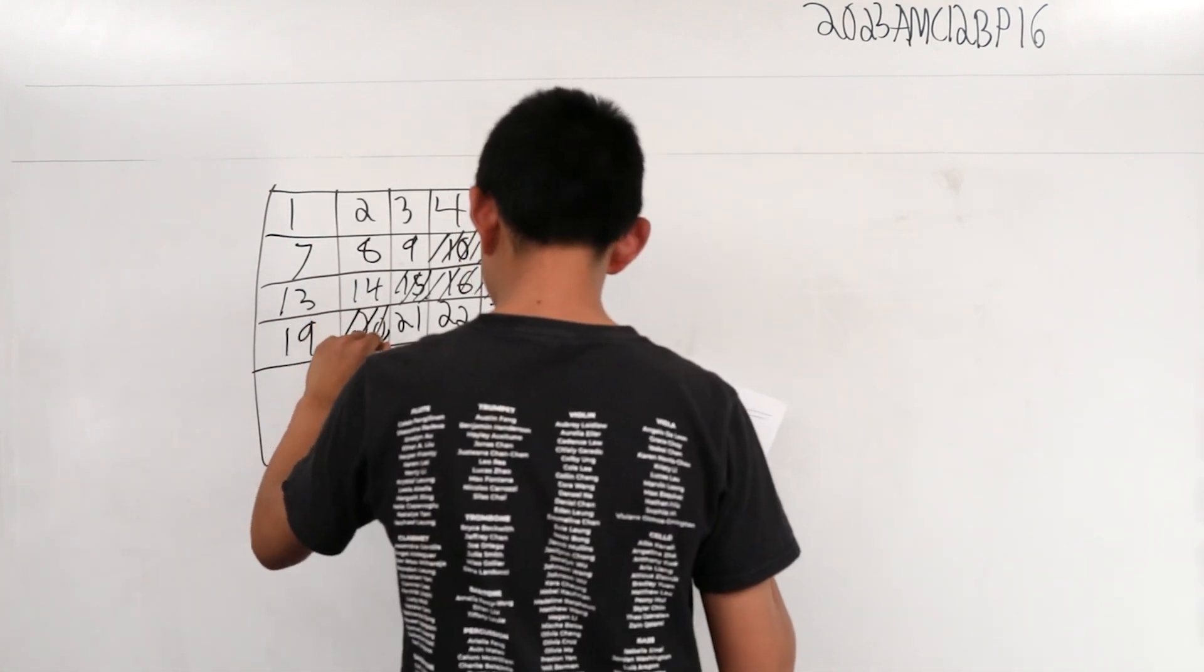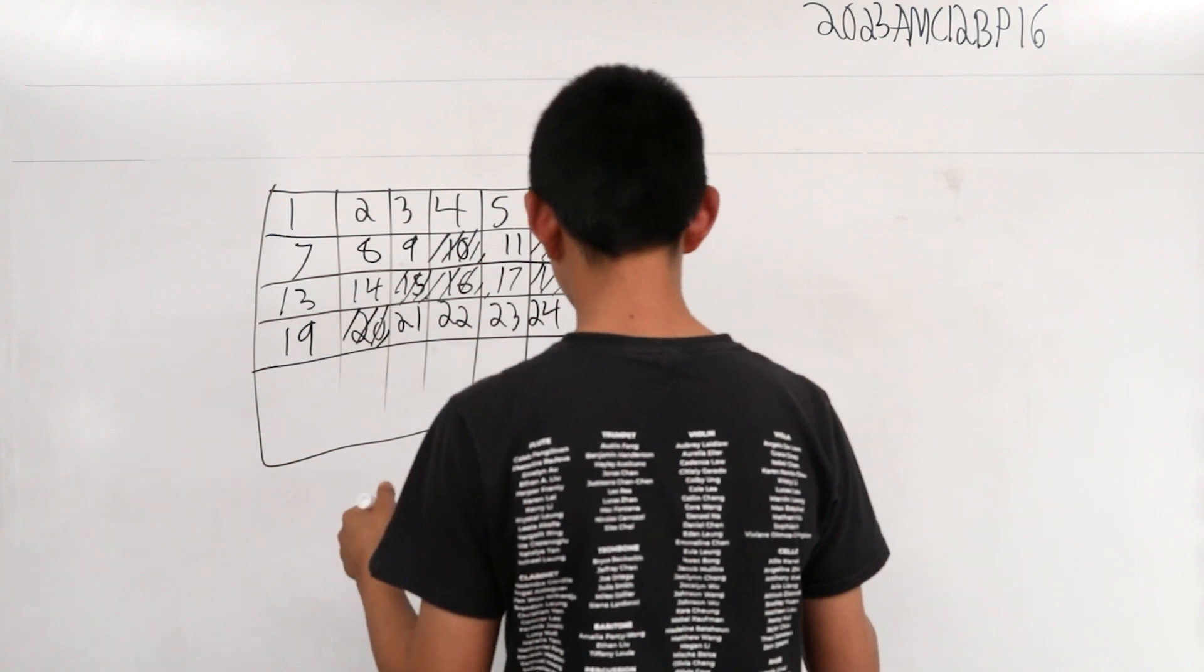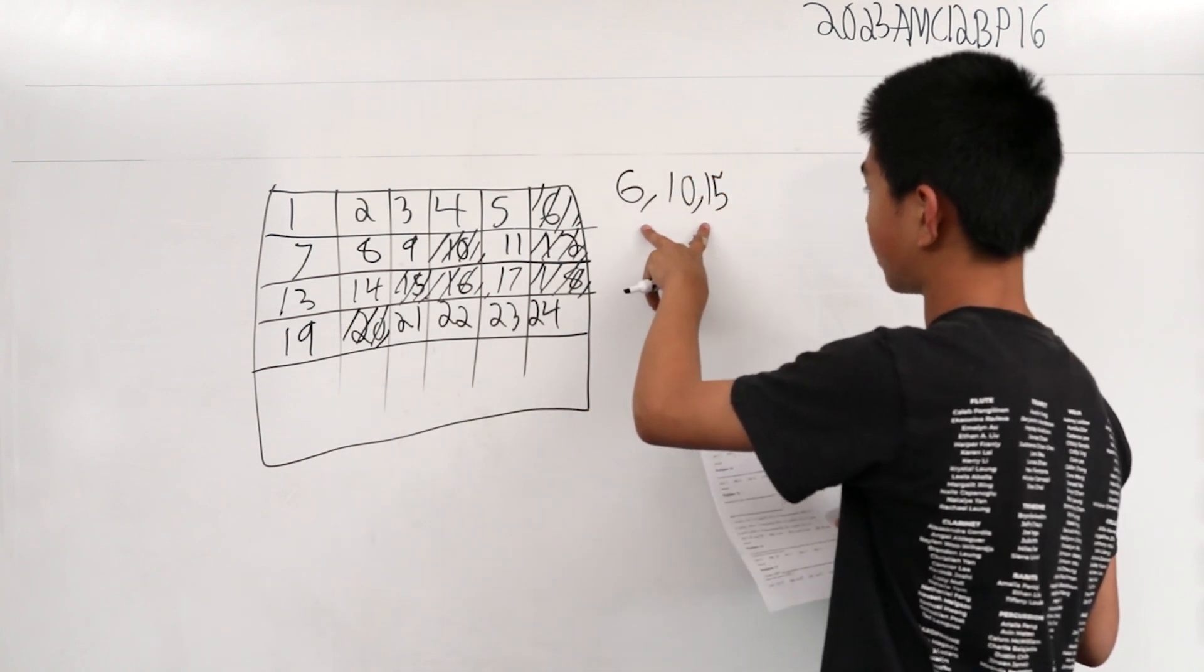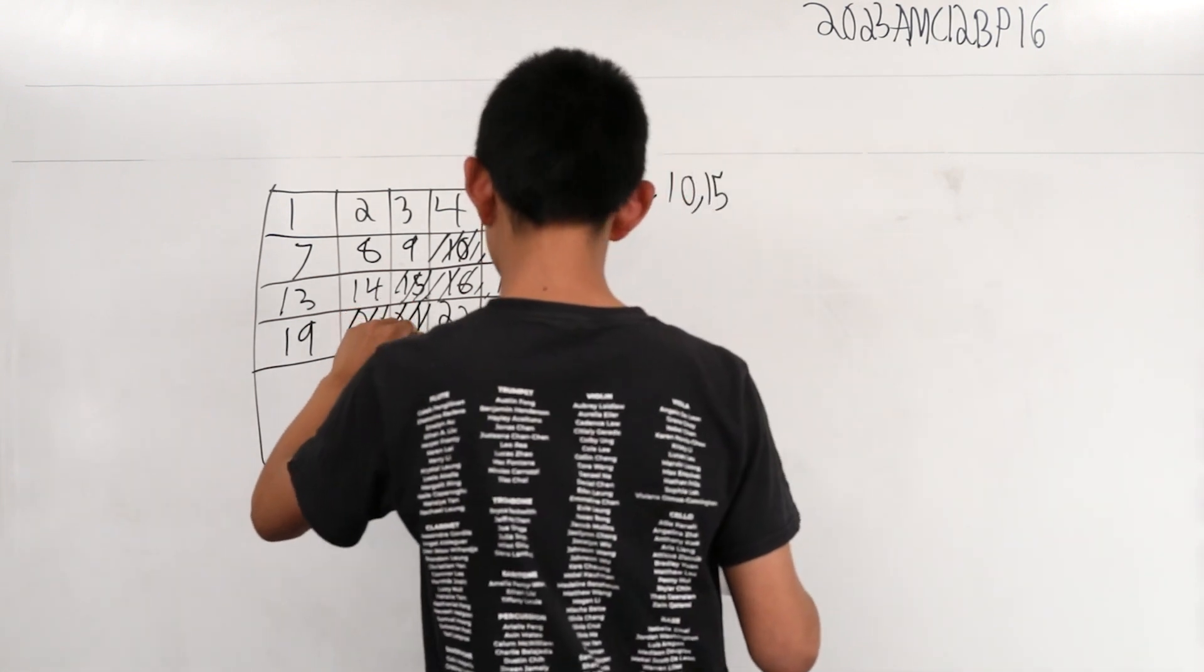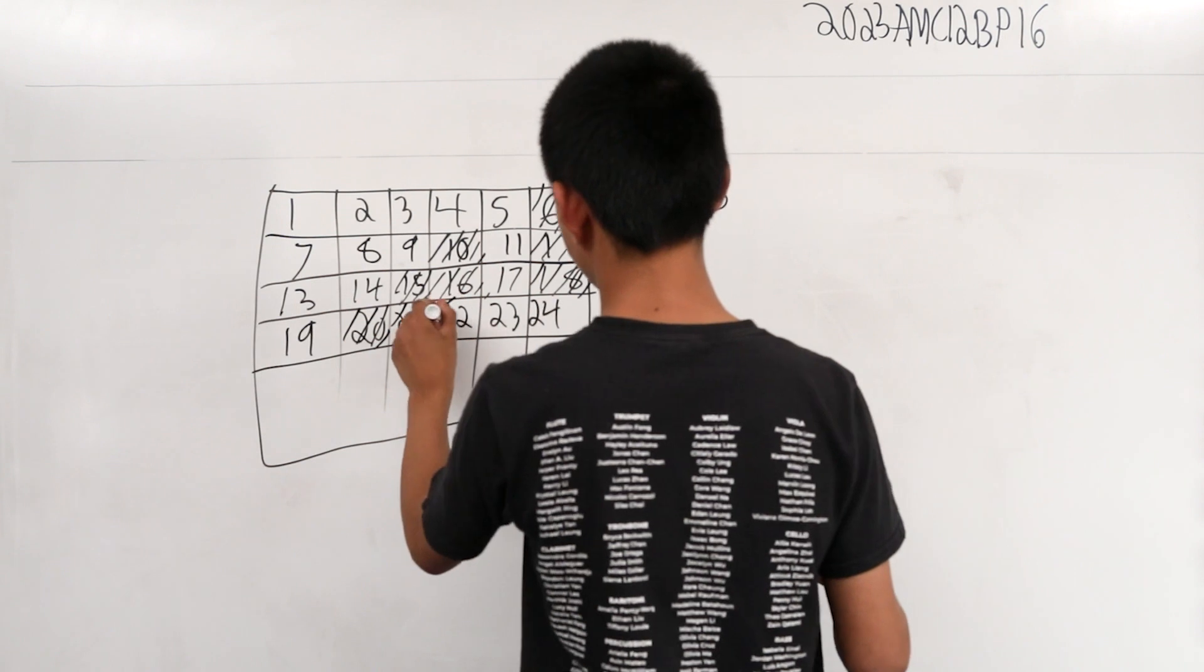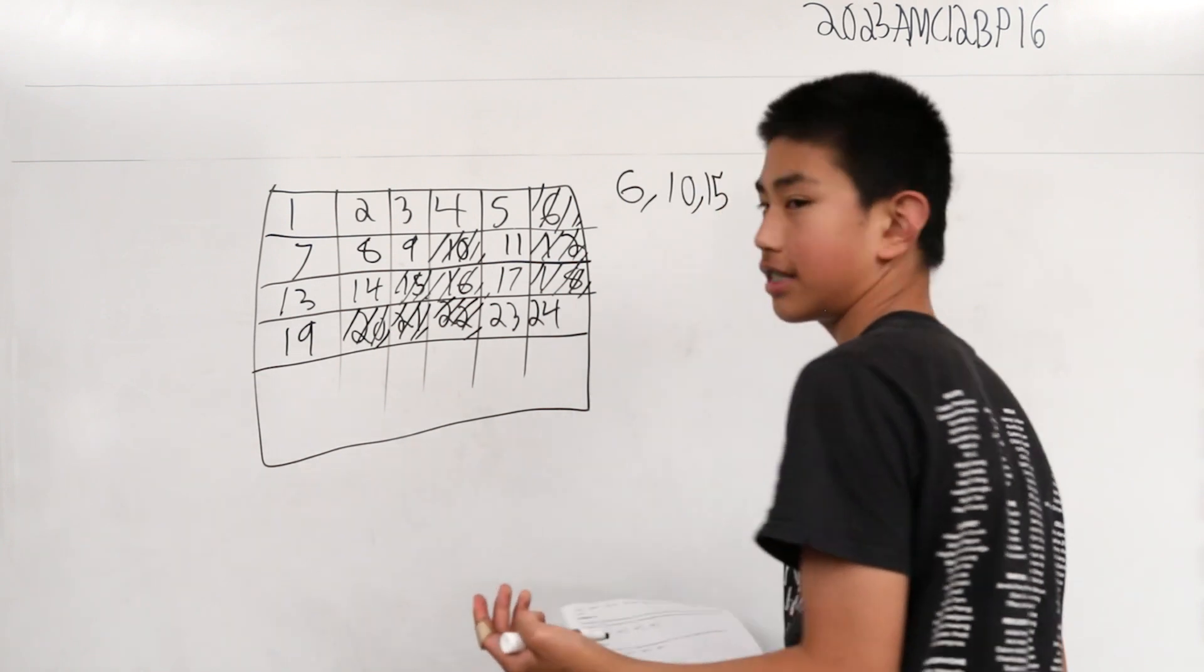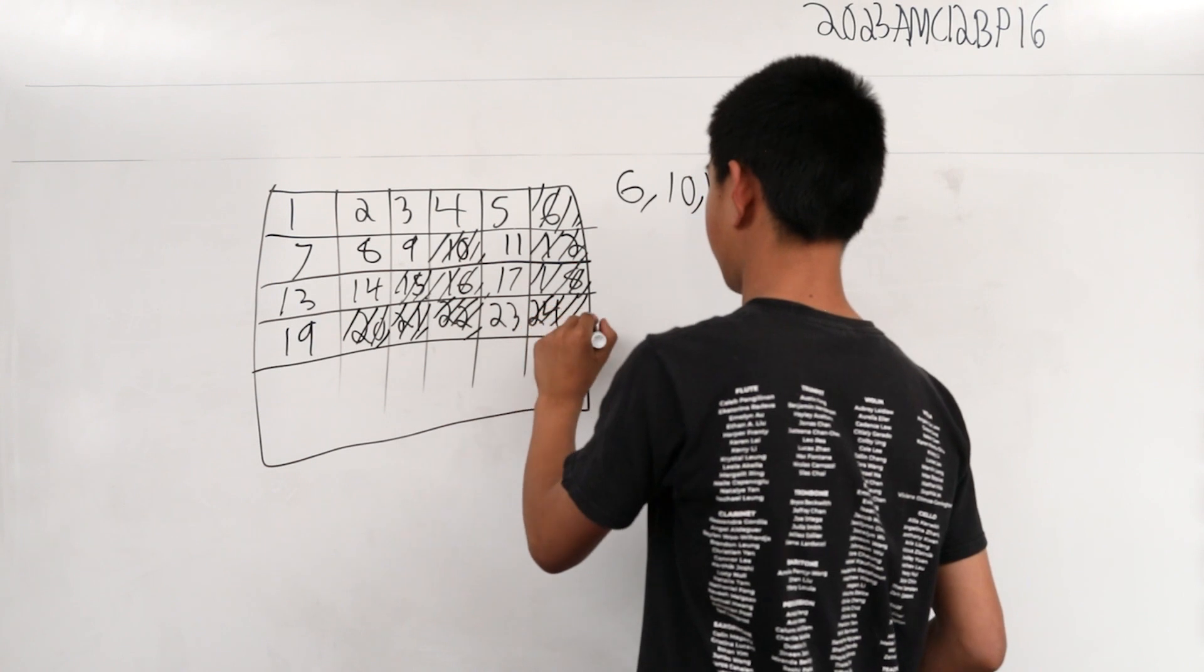21, can you make that? Yes, you can make that by adding 6 and 15. 22 you can make with 12 and 10. Can you make 23? That is impossible, but 24 is a multiple of 6, so it works.